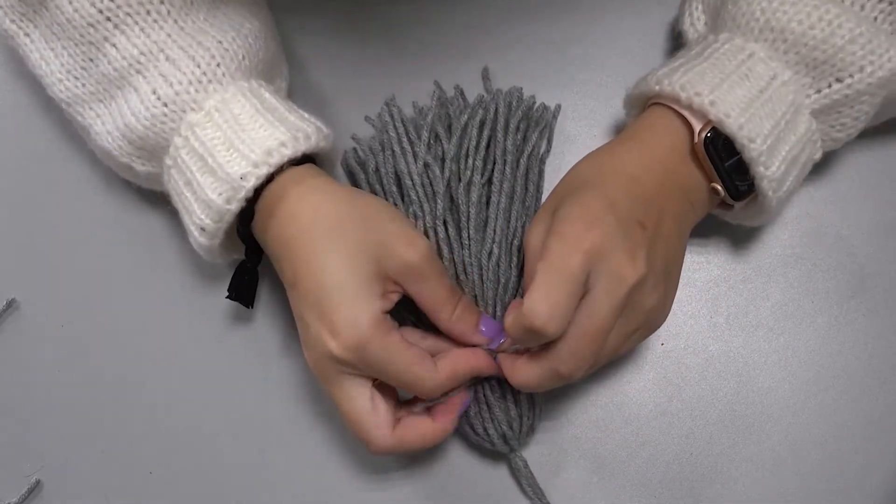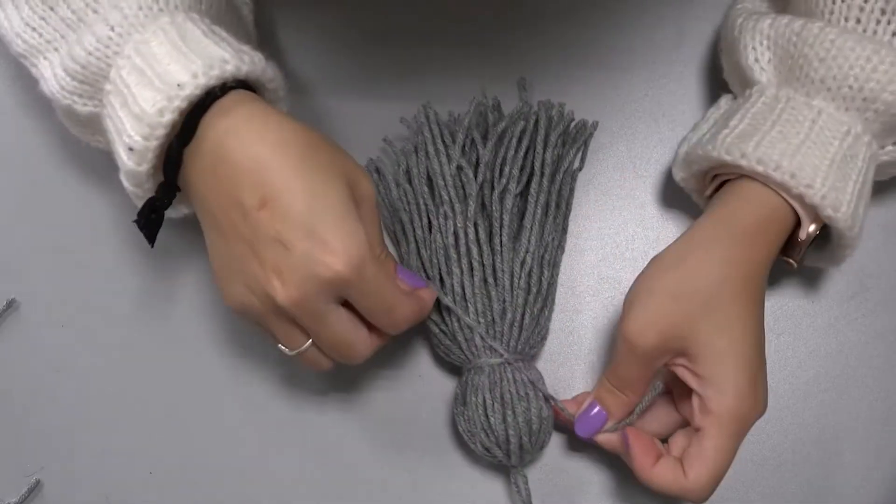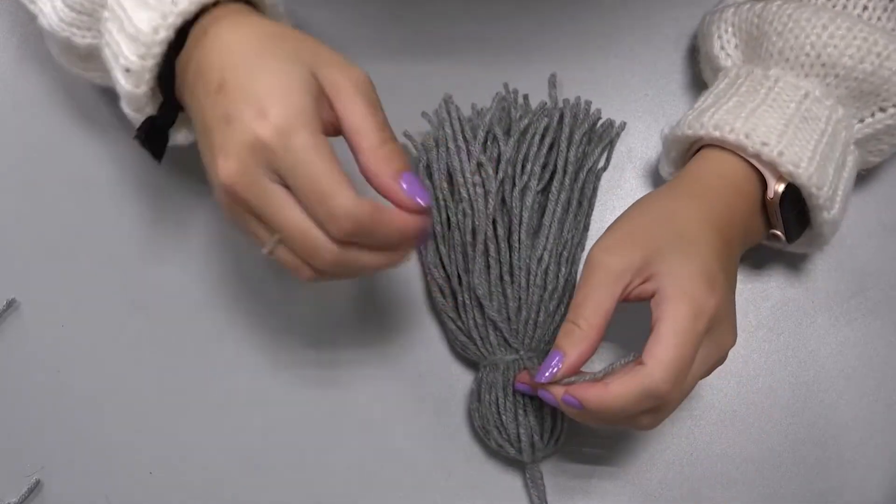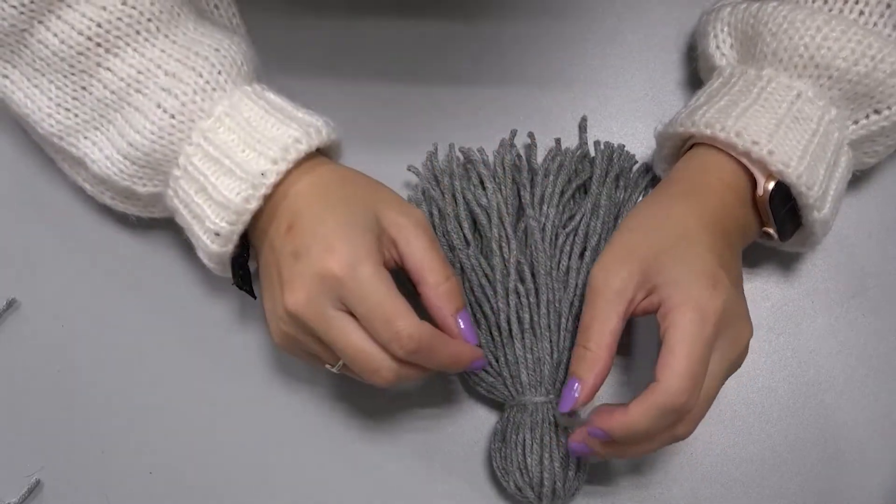If you have an elastic band, that'll work too. Or you can just use the same yarn. And you're going to tie it off. And then you're going to brush the one that's pointed down, down.